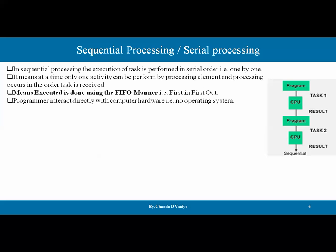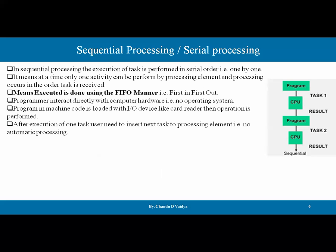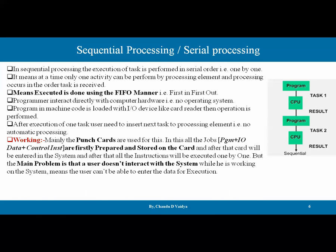The program is written for the hardware and then submitted. The program is in machine code and is loaded with an I/O device like a card reader, then the operation is performed. After execution of one task, the user needs to insert the next task to the processing element — there is no automatic processing. So tasks cannot be batched automatically; after getting the result of one, you feed the next one manually.